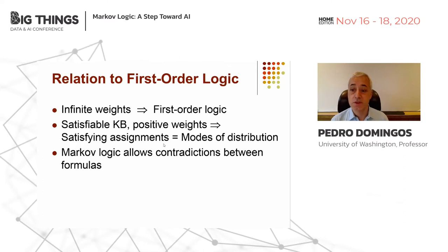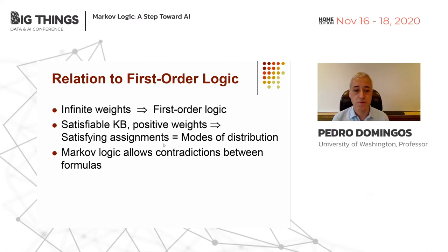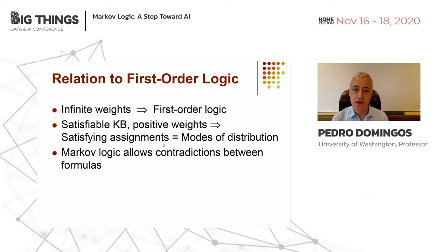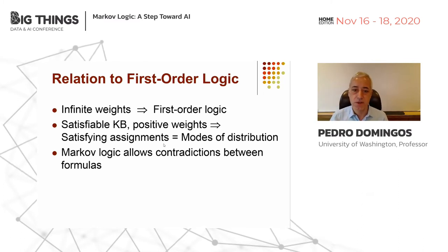How does Markov logic relate to first-order logic? Very nicely — first-order logic is the special case of Markov logic that you get when you let the weights go to infinity. When the weights go to infinity, the constraints become hard and you go back to the case where violating one of them makes the world impossible. The more interesting case is when the weights are finite. If the knowledge base is satisfiable and all the weights are positive, then the satisfying assignments are modes of the distribution. The worlds that first-order logic likes are still there in Markov logic — they're just the modes of the probability distribution. And as you move away from the modes, the probability degrades gradually.